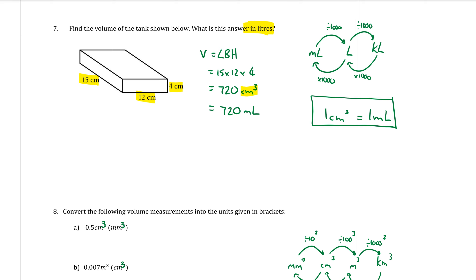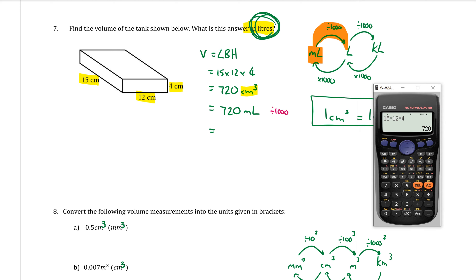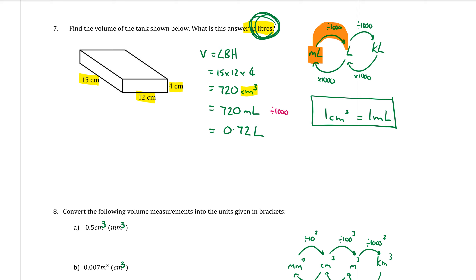But the question asks for litres, not millilitres. Using the capacity diagram, to go from millilitres to litres you divide by 1000. So 720 divided by 1000 equals 0.72 litres. Look out for questions where you must take your volume and convert it into capacity units.